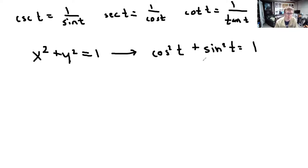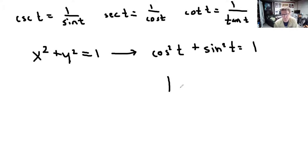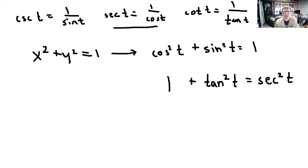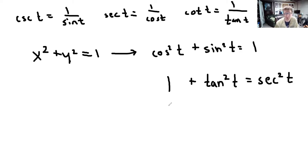There are a couple more Pythagorean identities. If you divide cosine²(t) + sine²(t) = 1 by cosine²(t), you get 1 + tan²(t) = sec²(t). And if you divide through by sine²(t) instead, you get cot²(t) + 1 = csc²(t). Those are the three Pythagorean identities.